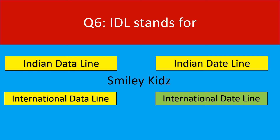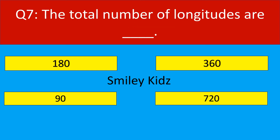Question number 7. The total number of longitudes are... Your options are 180, 360, 90, 720.